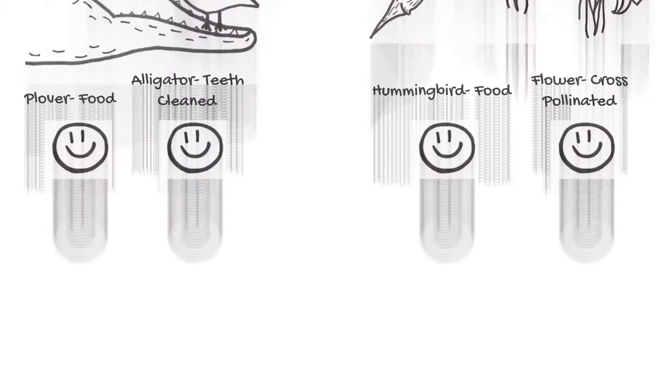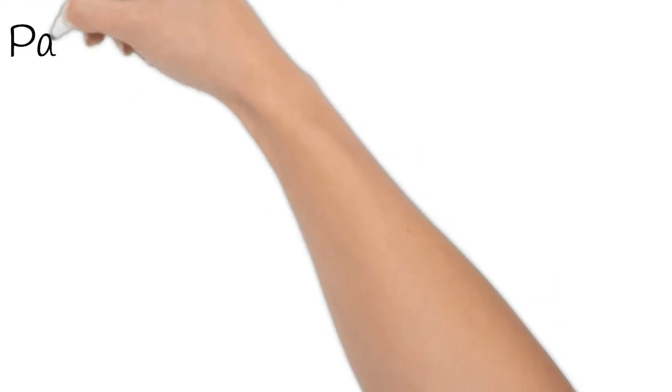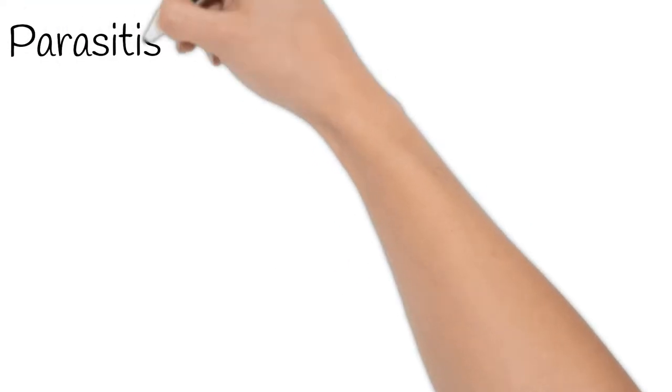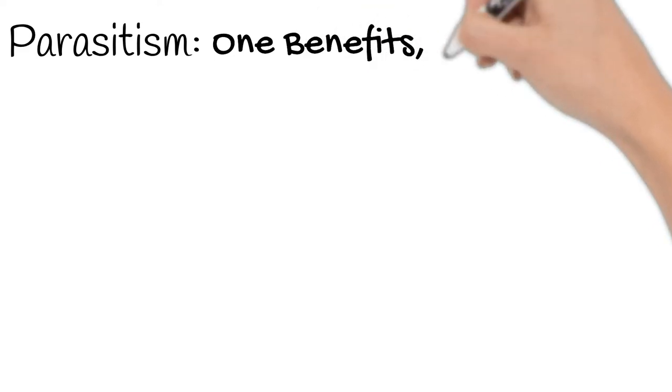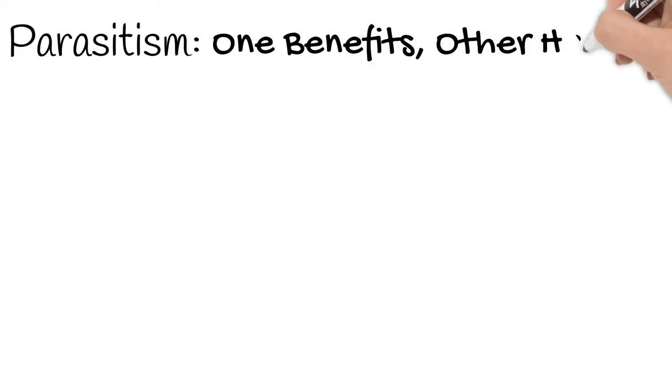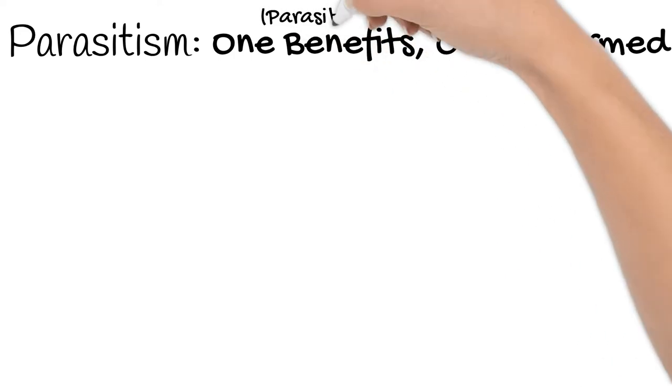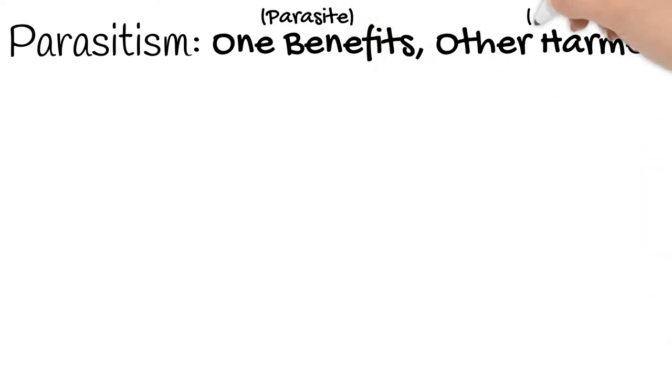Our next type of symbiotic relationship is parasitism. If you think of what you know of parasites, you'll already know what happens in these relationships. Here, one organism benefits, but the other is harmed. The one benefiting is called a parasite, and the one being harmed is called a host.